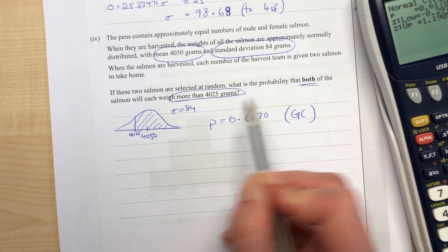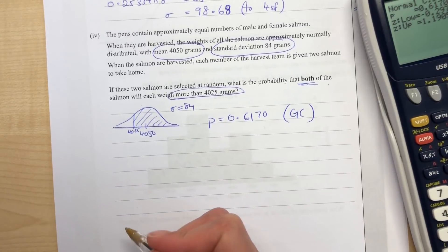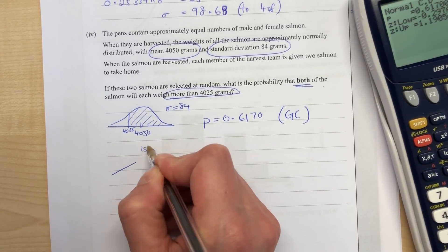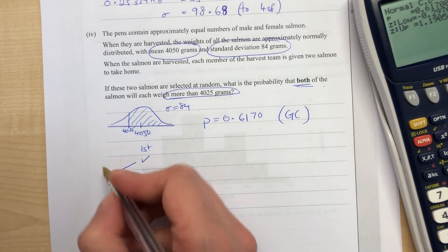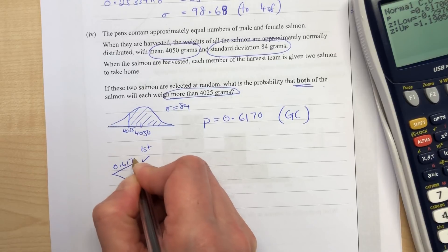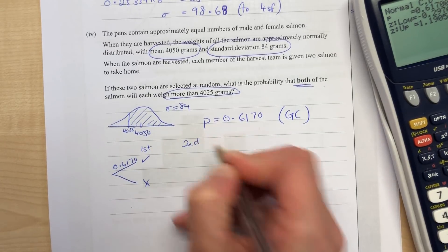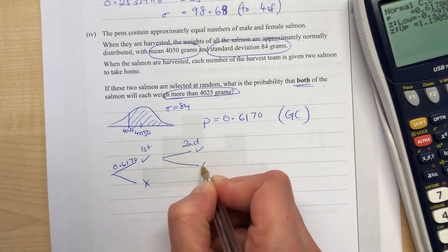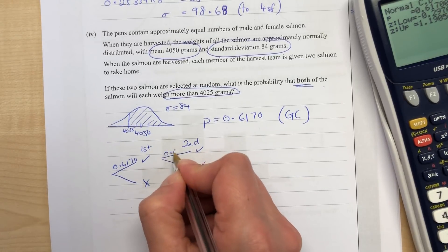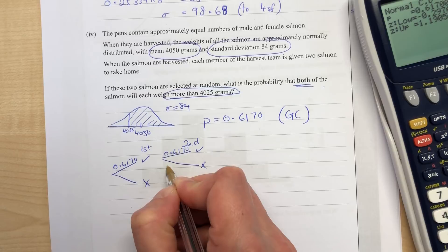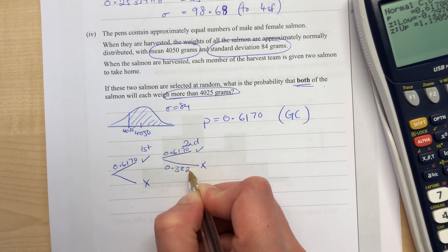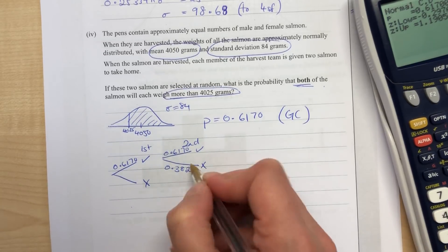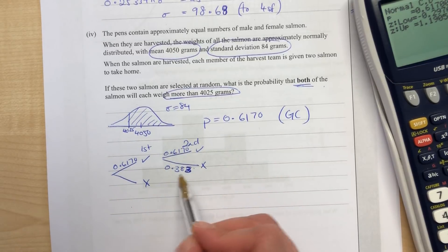Now, the chance that both of them are more than that - it helps me to think of this like a tree diagram. First fish could be over or not, so the chance is 0.6170. The second fish could be over or not, so 0.6170 would go on there. The opposite would be 0.383 if we needed it.